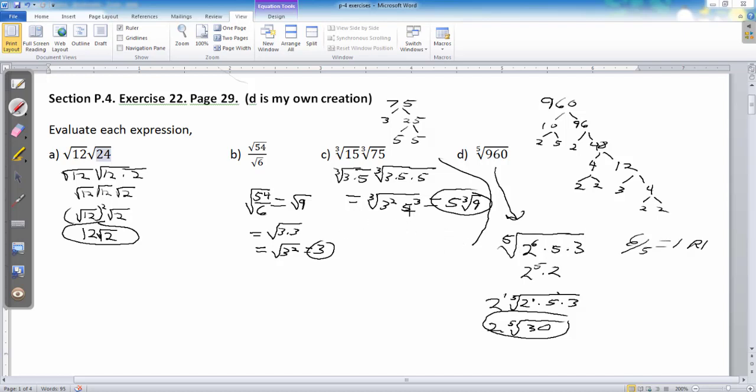Going back over here, 3 went into 2, 0 times with a remainder of 2. So, I couldn't bring out any 3's. I had to leave 2 inside. 3 went into 3 one time. So, I got to bring out 1, 5 and leave none inside, because 3 went in evenly.